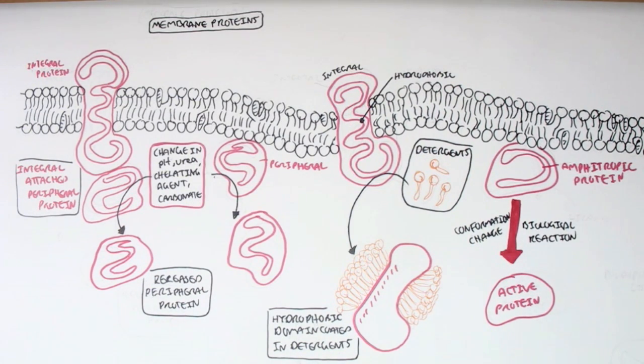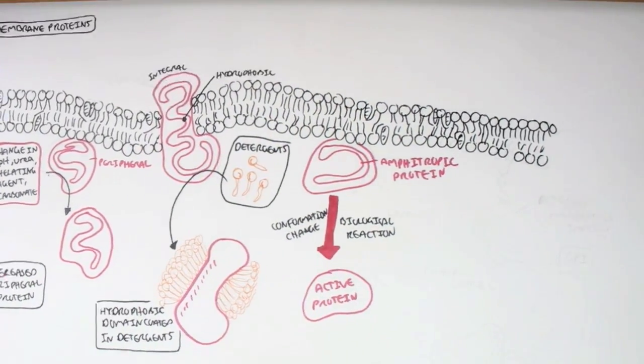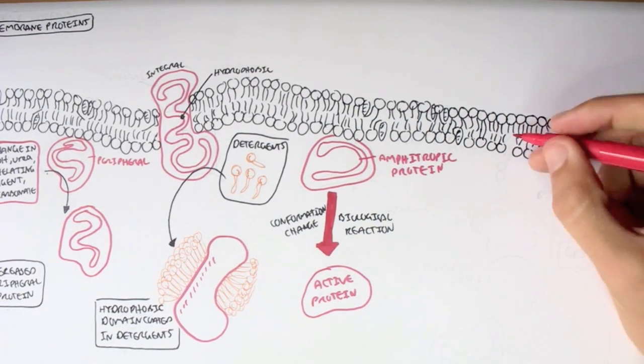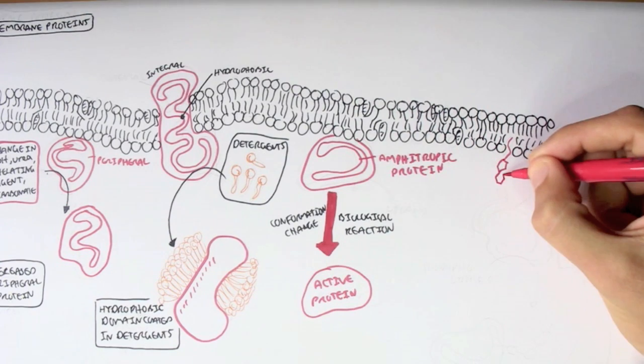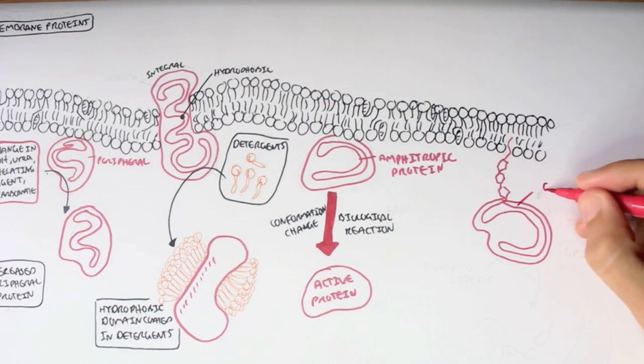And unlike the integral protein and peripheral protein, this does not really require a chemical to be disassociated. The amphitropic protein only requires some form of biological reaction in the cytosol inside the cell for the amphitropic protein itself to be detached off the membrane, and then it can return to its original place after this biological reaction has ceased.